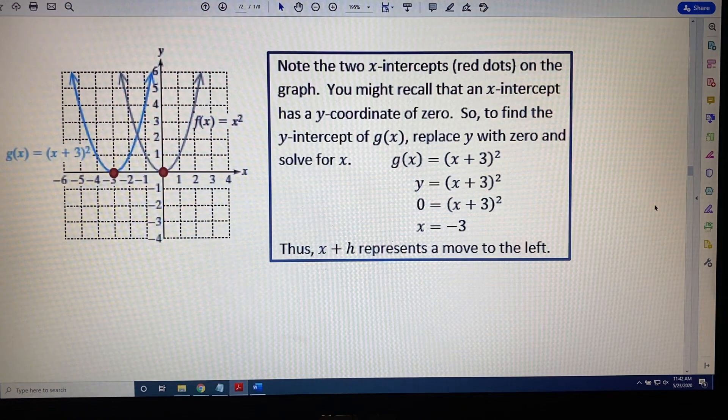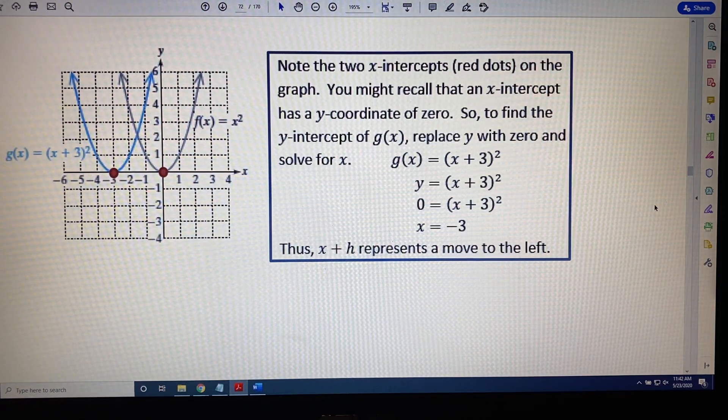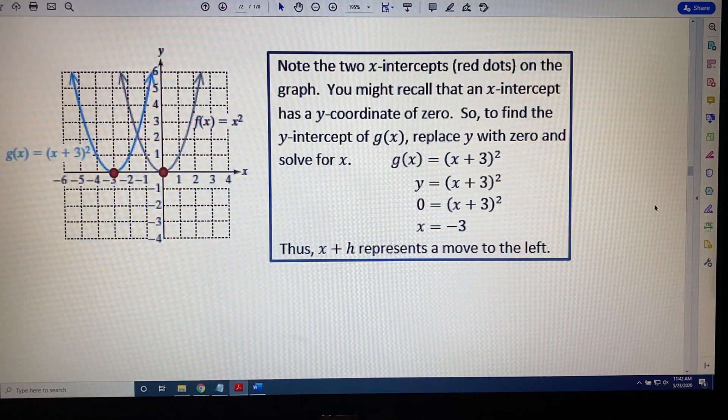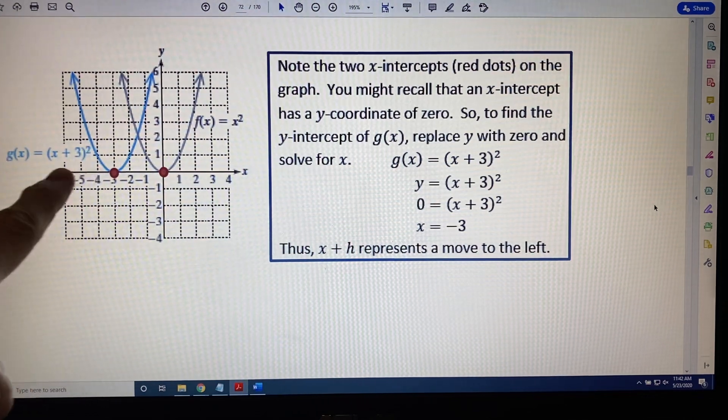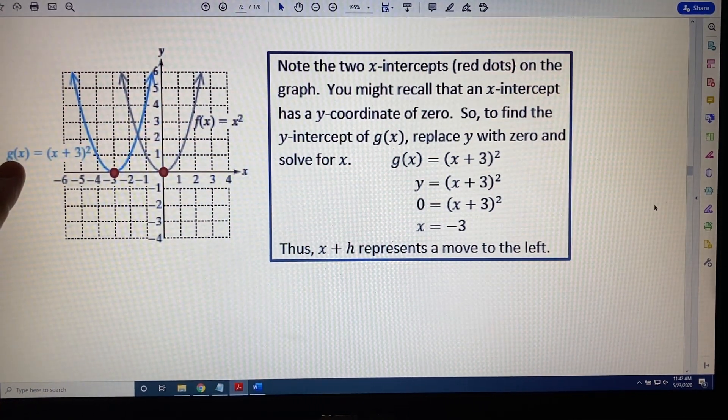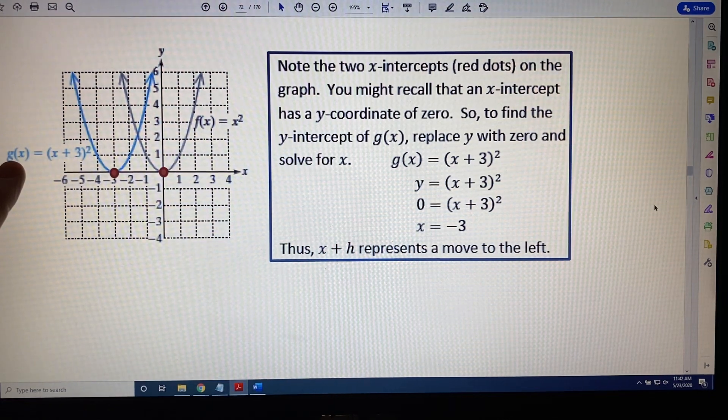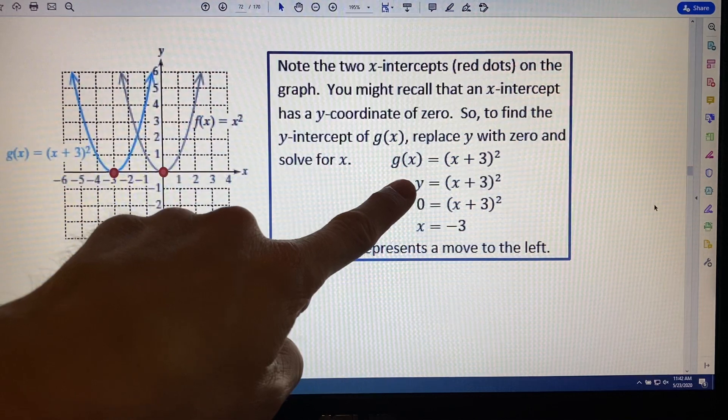You might recall that an x-intercept has a y-coordinate of 0. So to find the y-intercept of this equation for g(x), we replace the y, in essence the g(x), with 0, and we solve for x. So g(x) is equal to this. g(x) is the same as y.